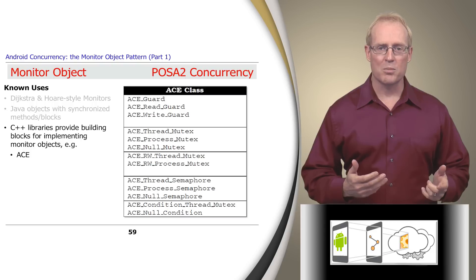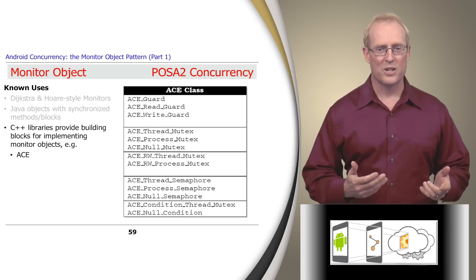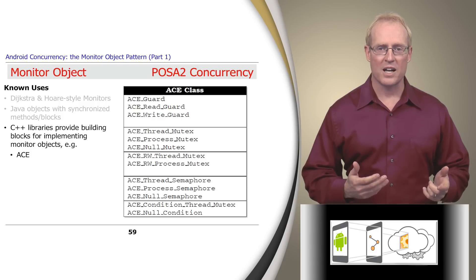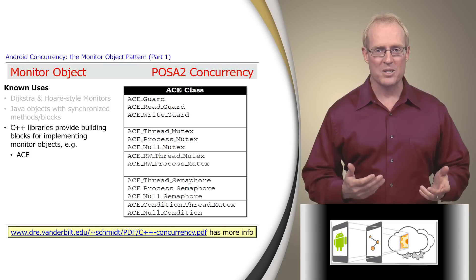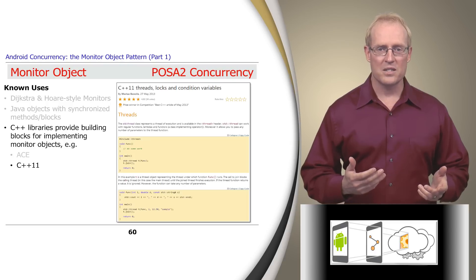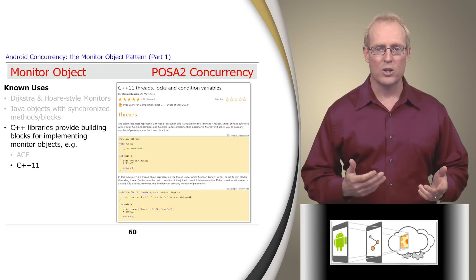C++ libraries also provide portable building blocks for implementing monitor objects. For example, ACE provides many reusable open source C++ wrapper facades for mutual exclusion (mutex locks) and condition variables that are portable to many operating system platforms, as described at this link. Likewise, C++11 specifies mutex locks and condition variables that enable developers to write multi-threaded code in a standard way, as described at this link.